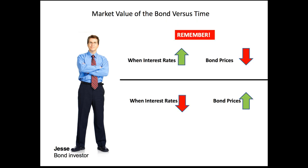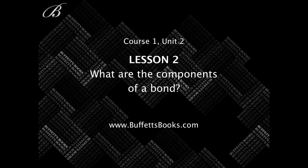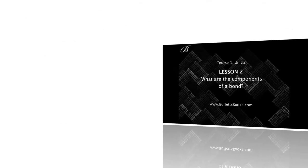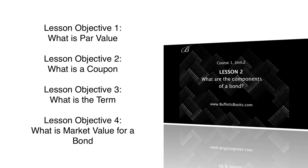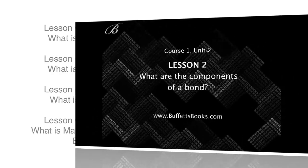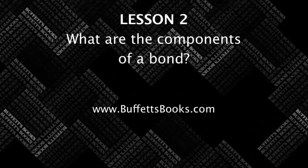If you can remember this, you're going to be good to go: when interest rates go up, bond prices go down. And when interest rates go down, bond prices go up. It's really that simple, and that's what you need to take away from this lesson. In this lesson we covered the terminology for par value, the coupon rate, the term, and how market value changes with interest rates. I look forward to seeing you in the next lesson.